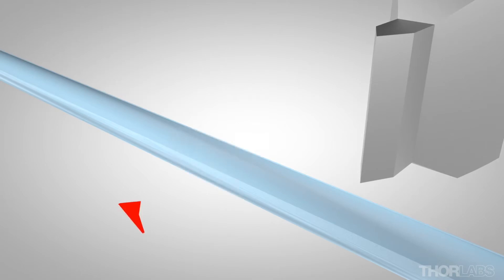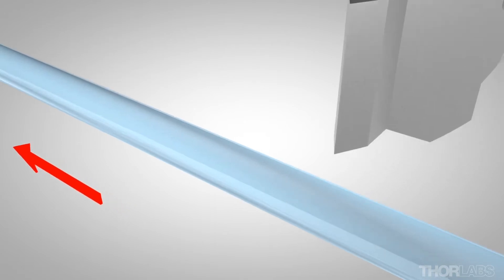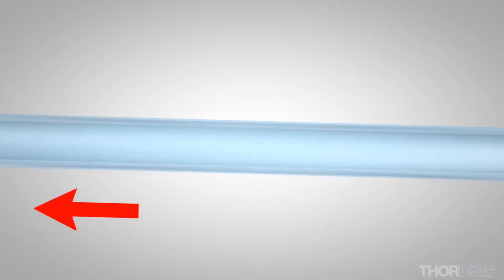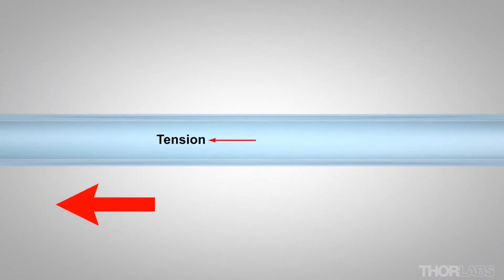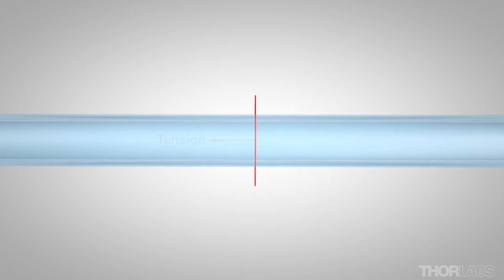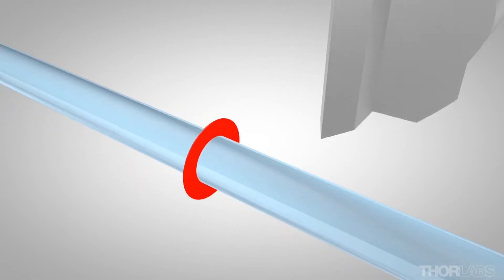The cleave plane is perpendicular to the direction of the resultant stress applied to the fiber. A flat cleave is achieved by applying a known tensile stress along the axis of the fiber. This is the only stress applied to the fiber, and so the cleave plane will be perpendicular to this stress direction and flat across the cross section of the fiber.